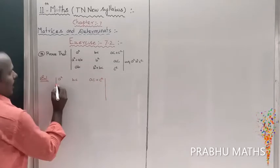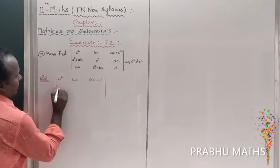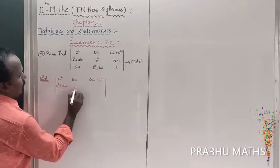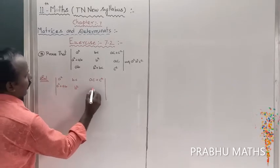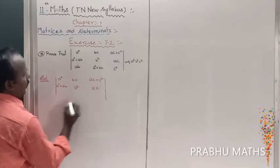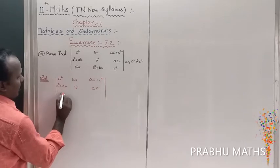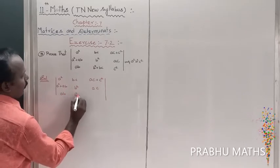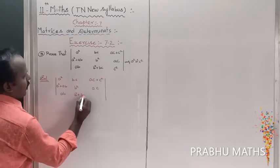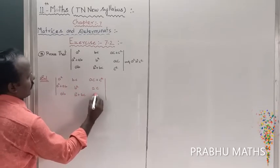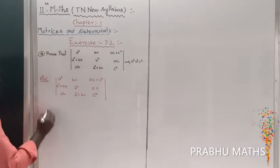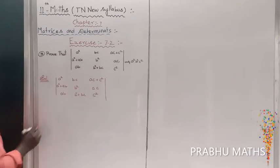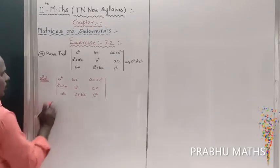The second row: a squared plus ab, b squared, ac. Then ab, b squared plus bc. Next: c squared. So let us now evaluate the left-hand side determinant.